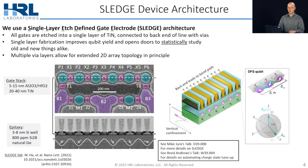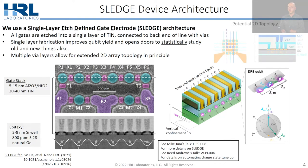These vias allow us to route our back-end control wiring on a separate layer from our gate electrodes. That's really powerful because it will allow us to reach, at least theoretically, 2D topologies with these quantum dot arrays that really weren't possible with previous technologies, such as the overlapping gate architecture.